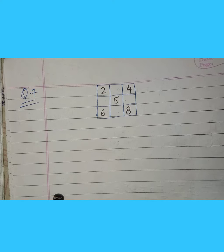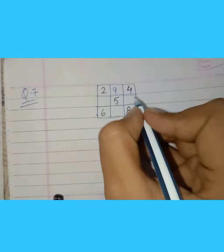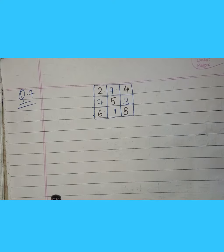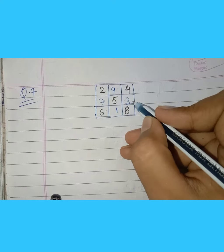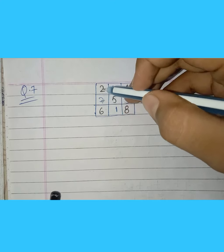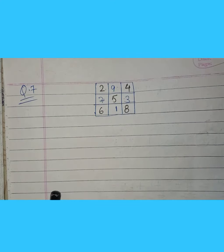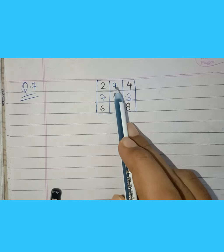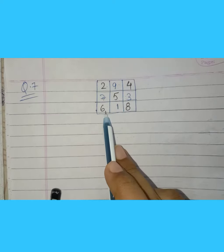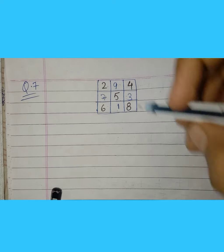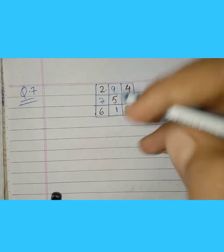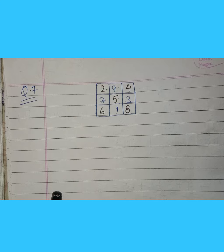The numbers I will be writing are 9, 3, 1, and 7. The answer for each row, column, and diagonal should be 15. Checking vertically: 8 plus 4 is 12, plus 3 is 15. Then 9 plus 1 is 10, plus 5 is 15. And 7 plus 2 is 9, plus 6 is 15. Checking horizontally: 9 plus 2 is 11, plus 4 is 15. Then 7 plus 5 is 12, plus 3 is 15. Then 6 plus 1 is 7, plus 8 is 15. Checking the diagonals: 8 plus 2 plus 5 is 15, and 6 plus 4 plus 5 is 15. So this question is completed.